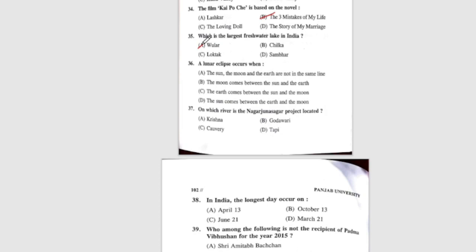Question 36: A lunar eclipse occurs when — the correct answer is option C, the Earth comes between the sun and the moon. Question 37: On which river is the Nagarjuna Sagar project located? The correct answer is option A, Krishna River. Question 38: In India, the longest day occurs on — the correct answer is June 21.